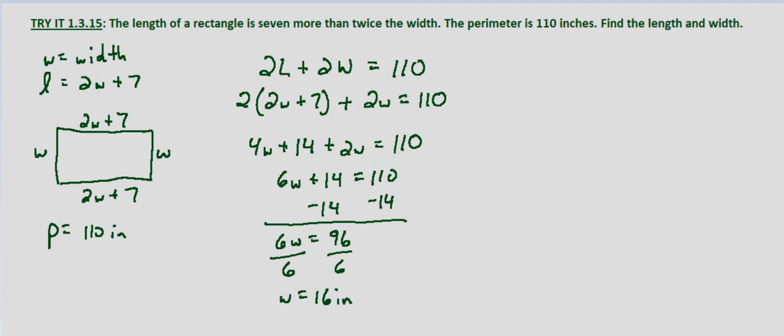Now for the length, we substitute into the formula we determined length equals 2 times, we solved for our width as being 16 inches plus 7, which equals 32 plus 7, which equals 39 inches.